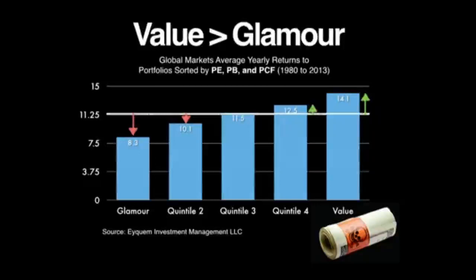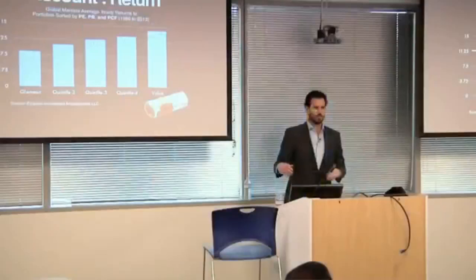So as you hunt in the market for these particular stocks, you can find those at the greatest discount to intrinsic value will tend to underperform, and those at the greatest premium to intrinsic value will tend to underperform.